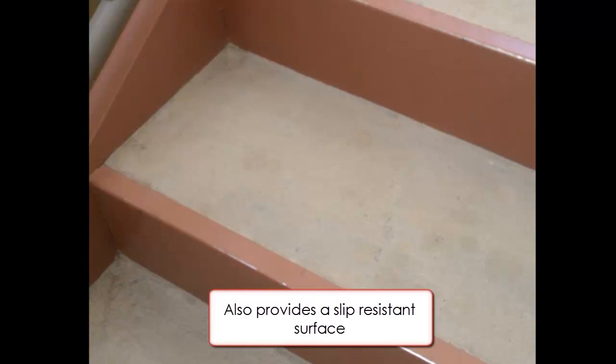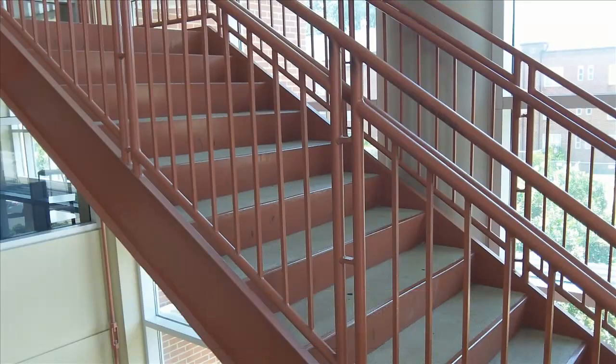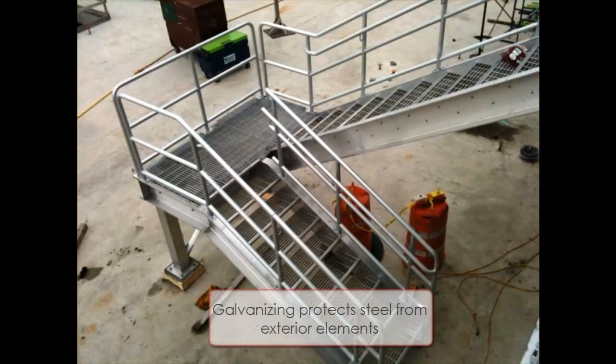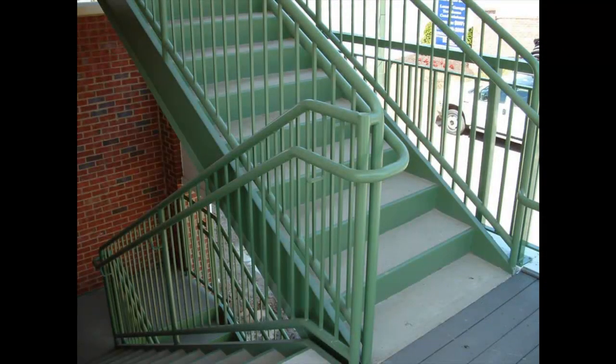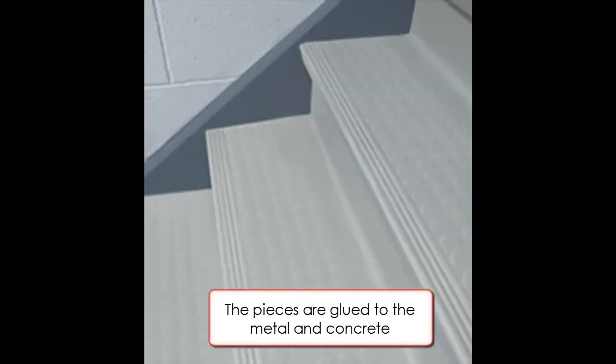Finishing capabilities for these systems is very broad, but commonly includes painting of the stringers and railings. The stringers and railings could also be galvanized if considering an exterior application. The risers can also be painted with the concrete treads left exposed, or the treads and risers can be covered with a multitude of different finished materials, all depending on the building type.